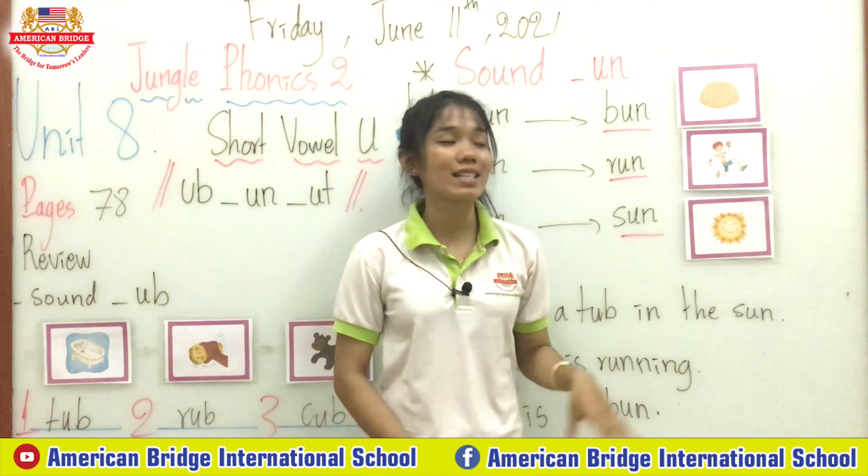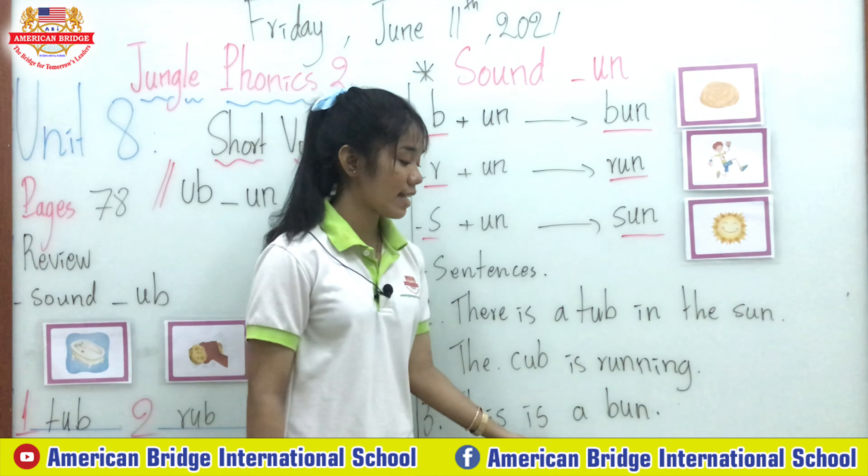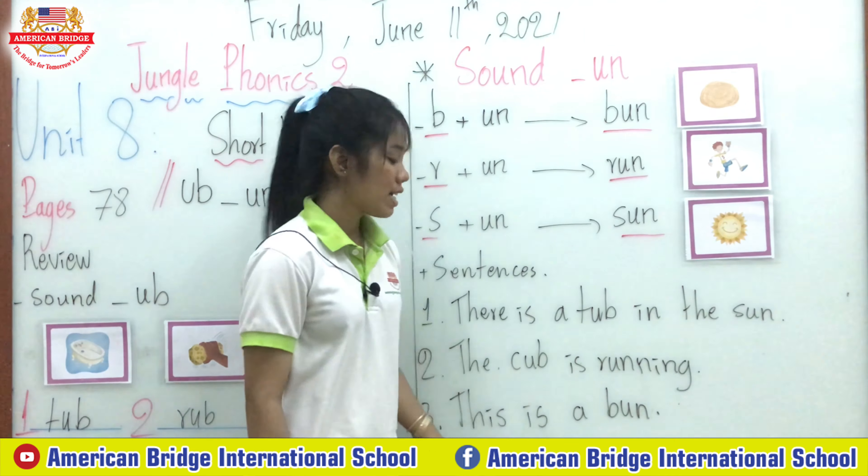Now look at the sentences. Teacher has three sentences with these words. Let's repeat after teacher. Number one: There is a top in the sun. Number two: The cup is running. You know cup, right everyone? Yes, the cup is running. Number three: This is a bun. This is a bun. Great job, everyone!